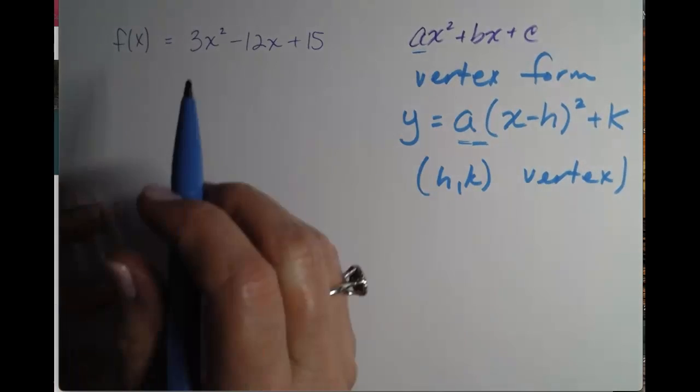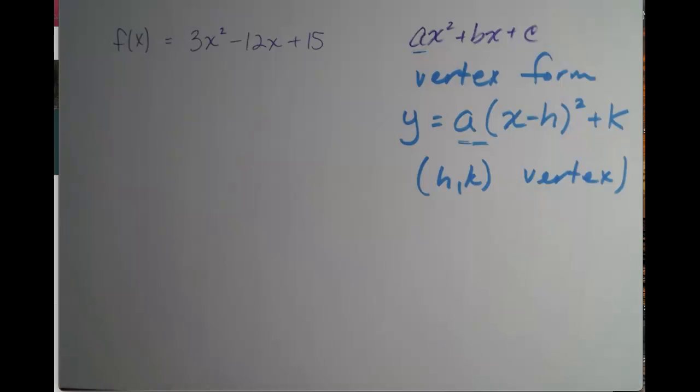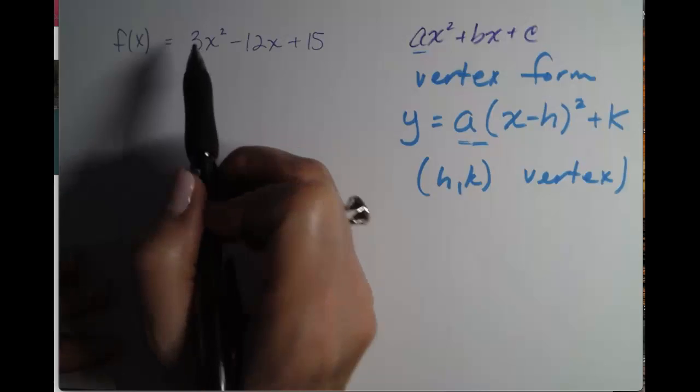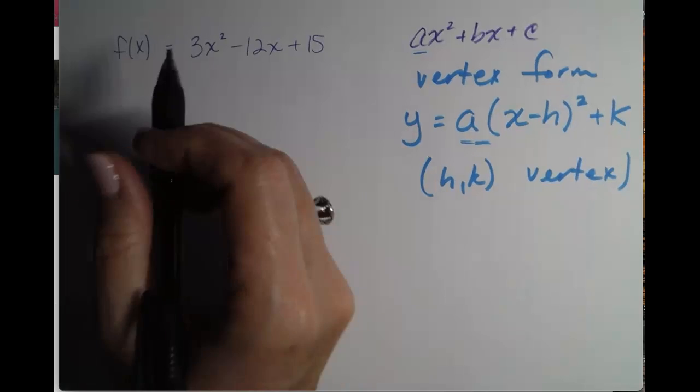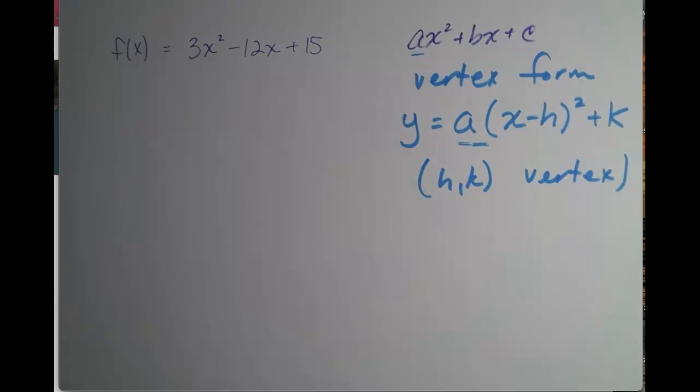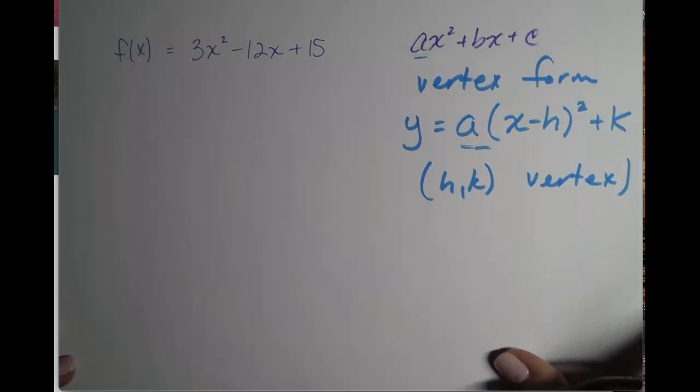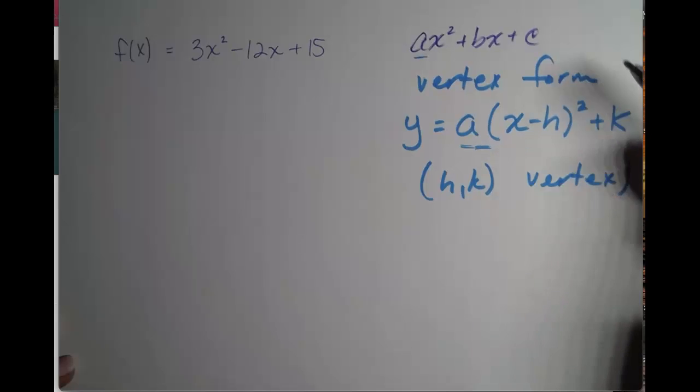The first thing I'm going to do is I'm going to take a look and see what our a value is. Our a value is 3. So since our a value is 3, we know that this parabola is going to be tall and skinny, and it is going to be opening up.